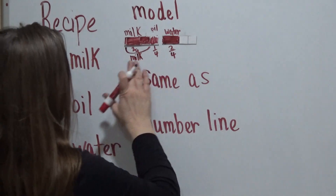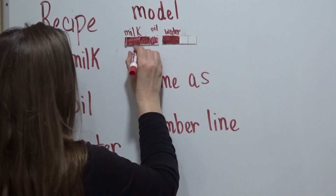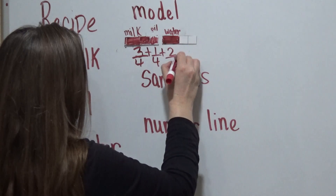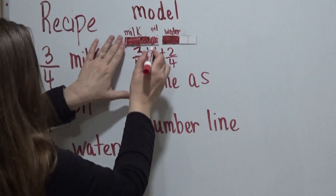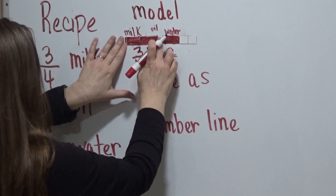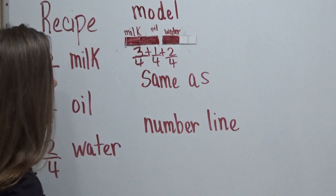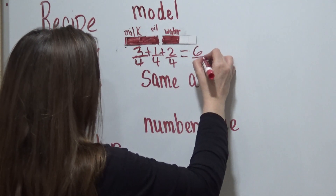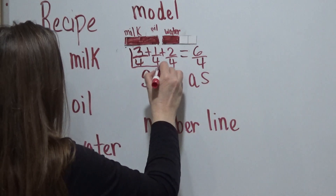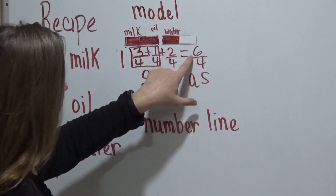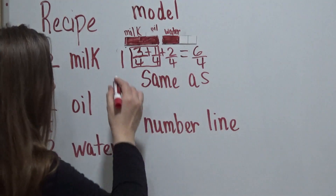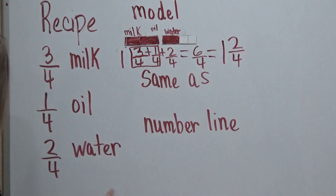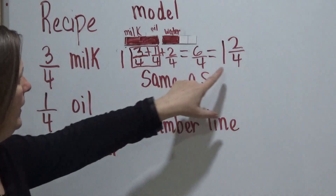So when we look at that, we'll go ahead and write this where you can see: 3 fourths plus 1 fourth plus 2 fourths. When we look at this, we can see that this entire area is shaded in — the entire 4 out of 4, which is 1 whole. So we can see in our model that we have 6 out of 4 shaded in. We know that 4 out of 4 gives us 1 whole. This is the improper fraction, which is 6 out of 4. But if we're writing it in mixed numbers, it's going to be 1 whole and 2 out of 4.